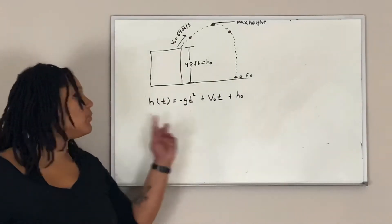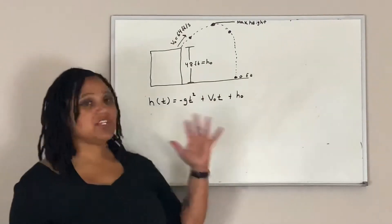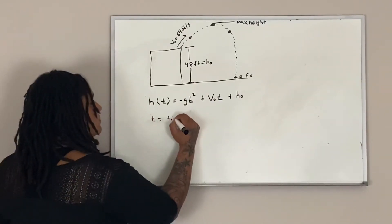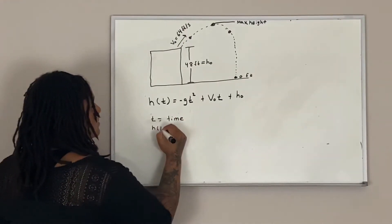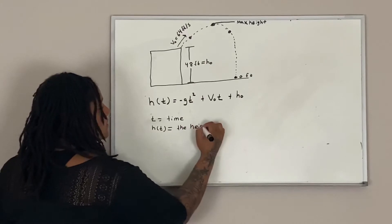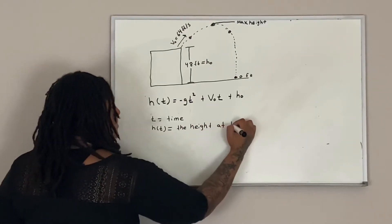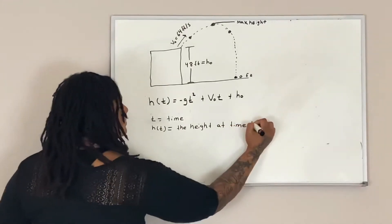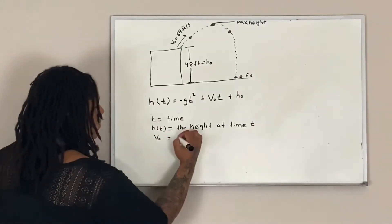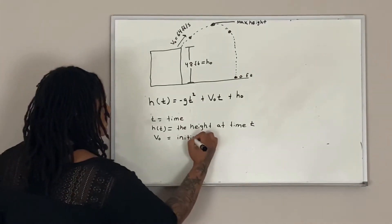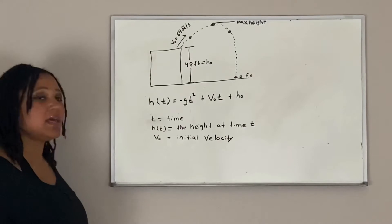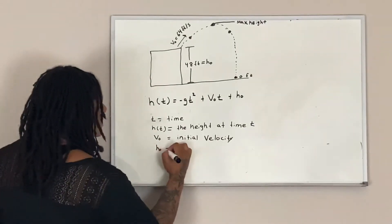Let's identify what each piece of information in the equation represents. T stands for time. H of t is equal to the height at time t. V naught, or V sub zero, stands for initial velocity. And H sub zero, or H naught, is the initial height.